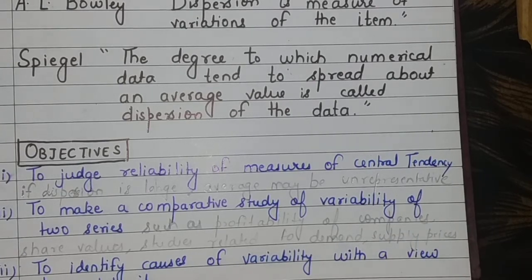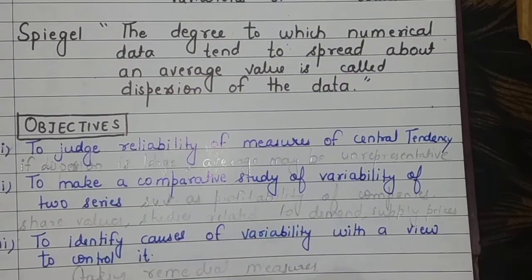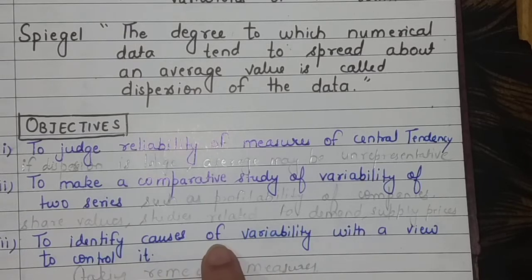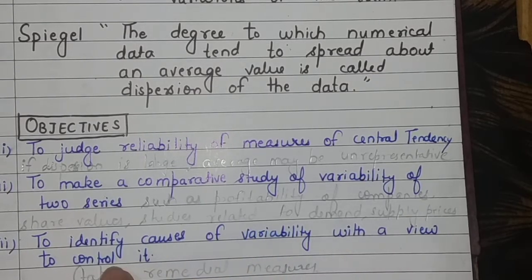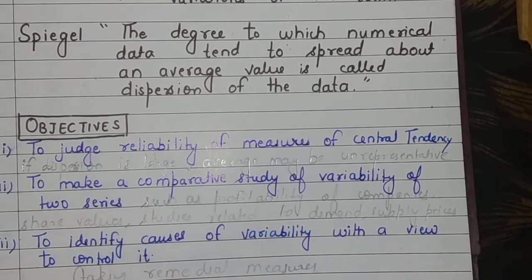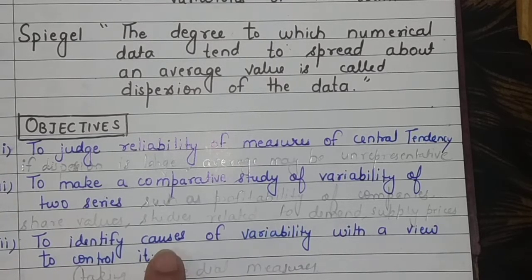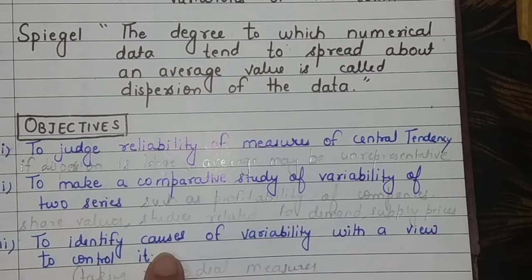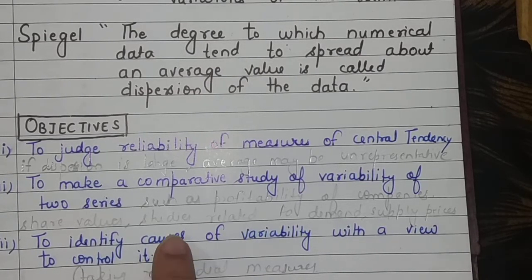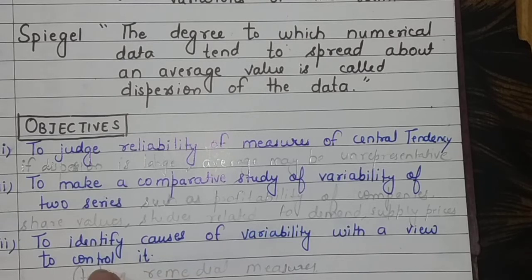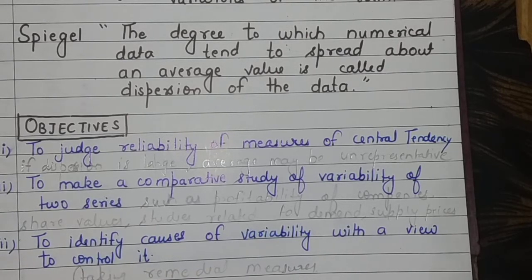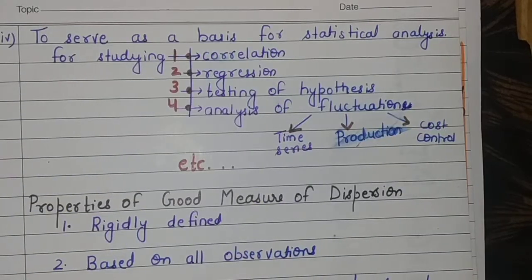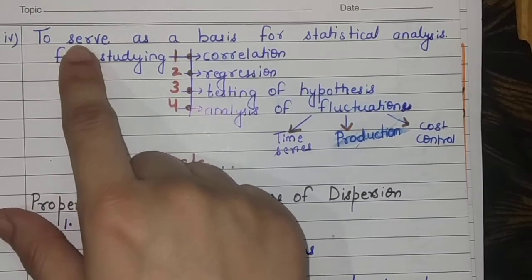Then the third reason to use measures of dispersion is to identify the causes of variability with a view to control it by taking certain remedial measures or actions.